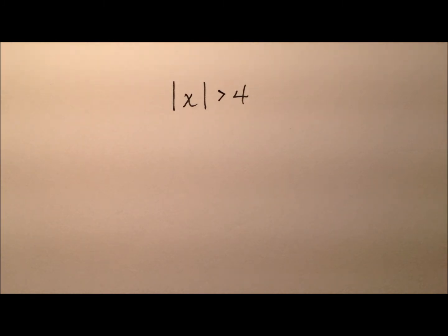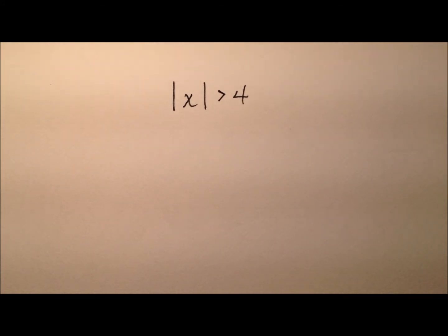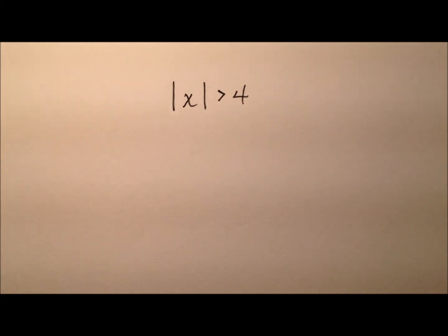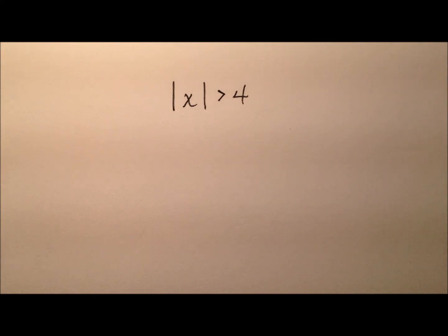Just like solving absolute value equations, we will break the inequality into two separate inequalities. And just like solving and graphing simple inequalities, when you multiply or divide by a negative, you must flip the sign of the inequality. And if you studied compound inequalities like unions and intersections, you're going to see an obvious connection here once we get started.